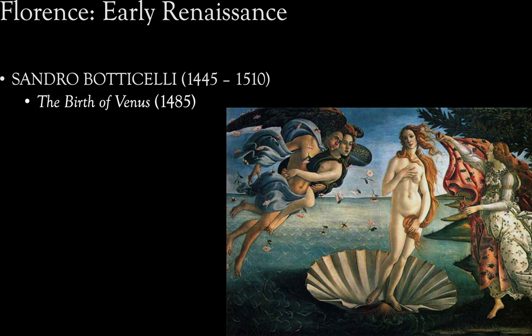This particular painting was commissioned by the Medici family to decorate a new villa. One of the ways we know it was commissioned by the Medicis is the trees in the background — these are actually orange trees, and oranges were a symbol of the Medici family used on the family's coat of arms. That's how someone living in Florence at the time would know who commissioned this painting.